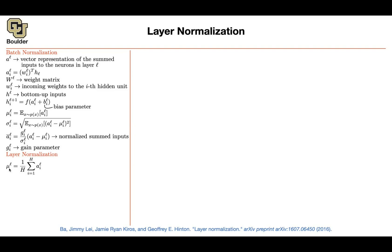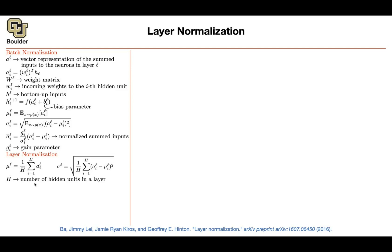Rather than computing your mean using the distribution of your mini-batch, you compute your mean by averaging over the entries of your vector — over the elements. So the summation is over the elements, not the data. Each a^L is a vector in R^H. You compute your statistic based on the elements of your vector, same for standard deviation. These numbers no longer depend on i — previously they did (mu_i, sigma_i). H is the number of hidden units in the layer.